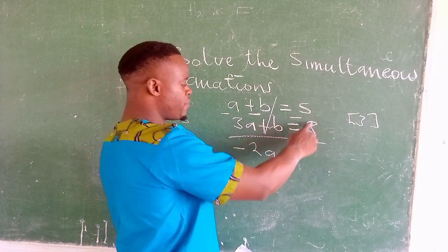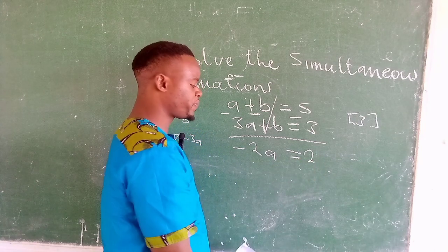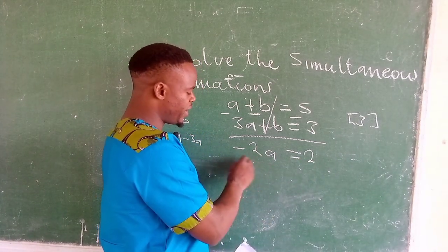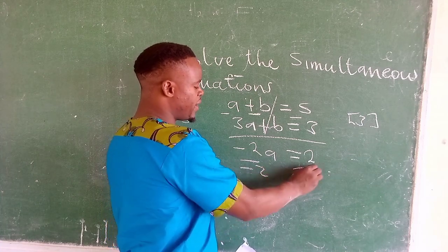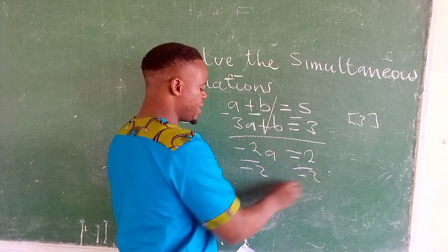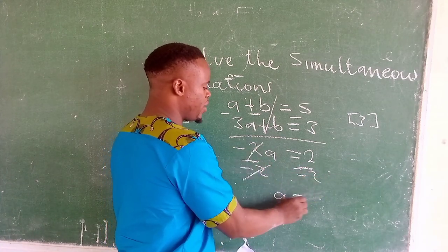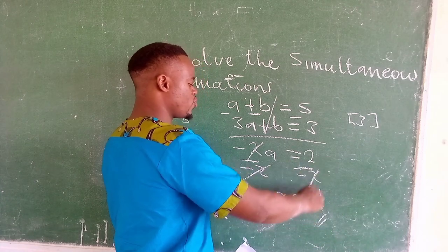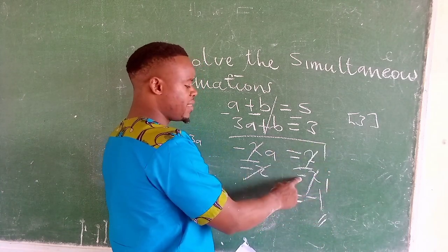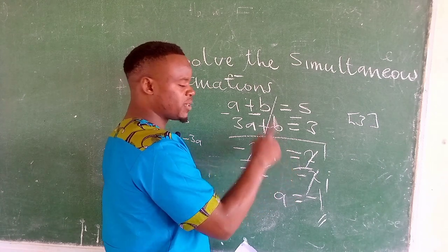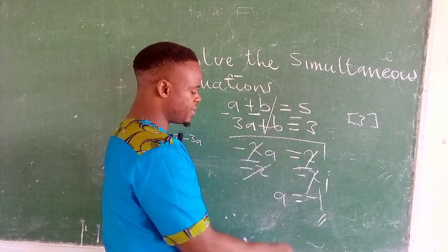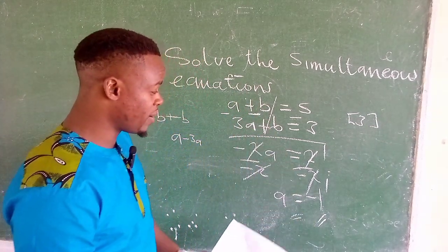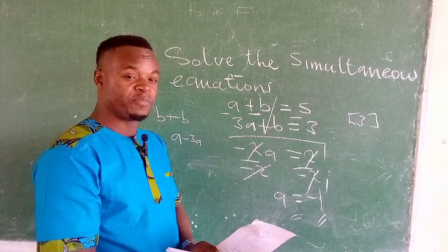Then 5 minus 3 should give us 2. Our interest is to find the value of a, so we need to divide both sides by negative 2. And a will be negative 1. There is a negative here which is not combined with any other negative. So the value of a is negative 1.